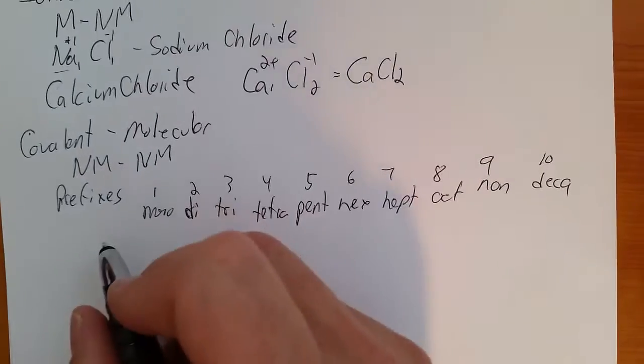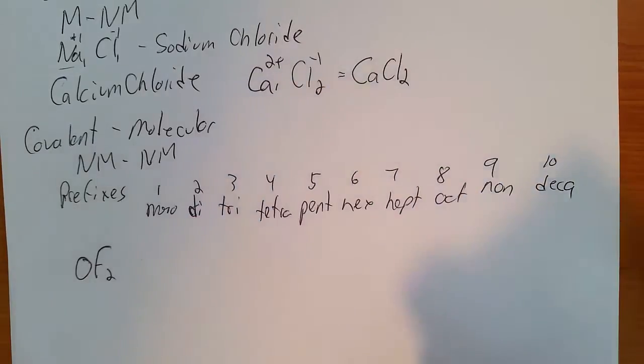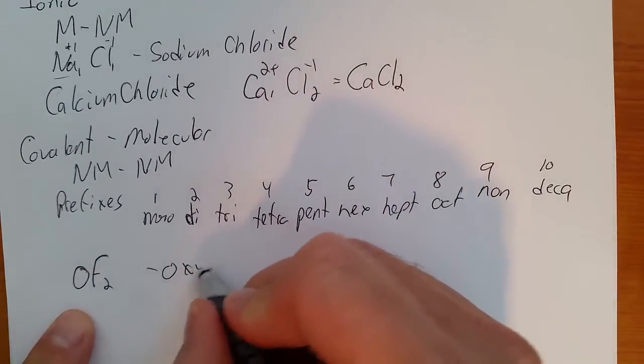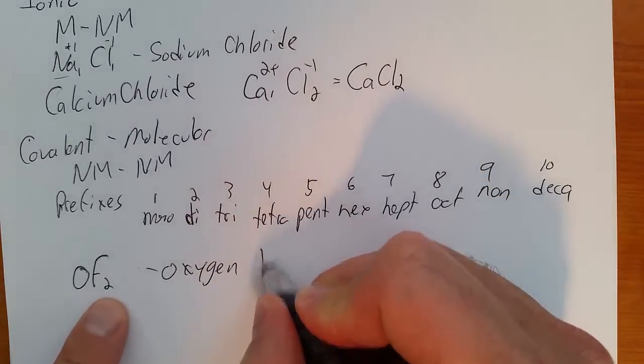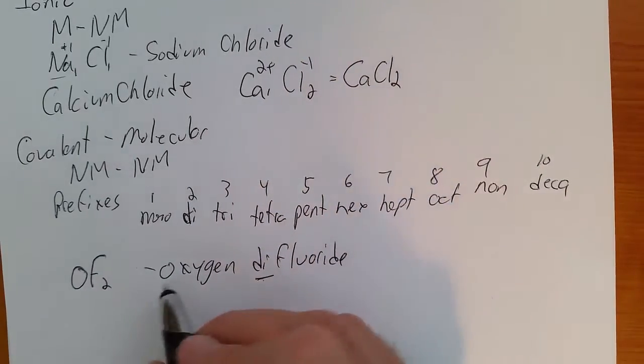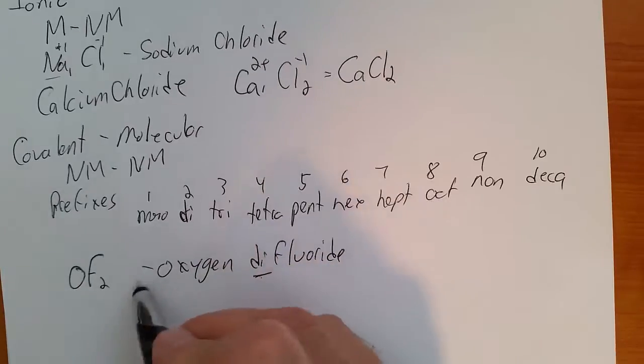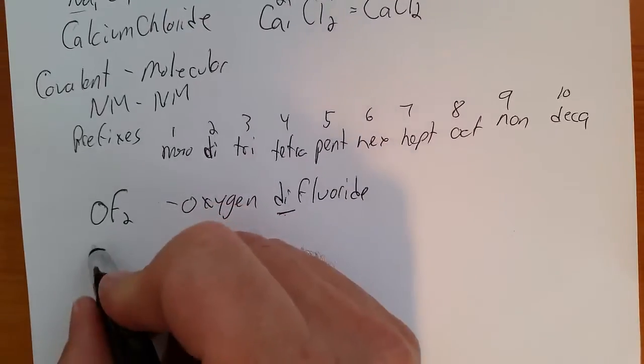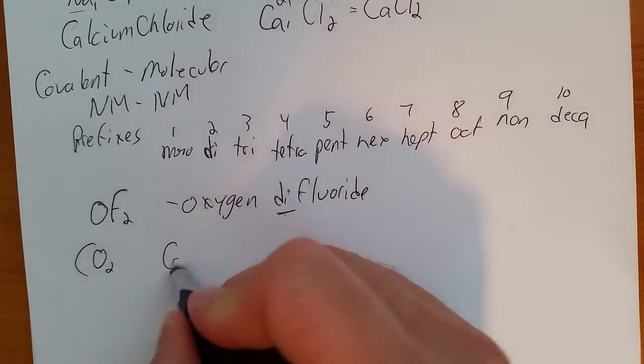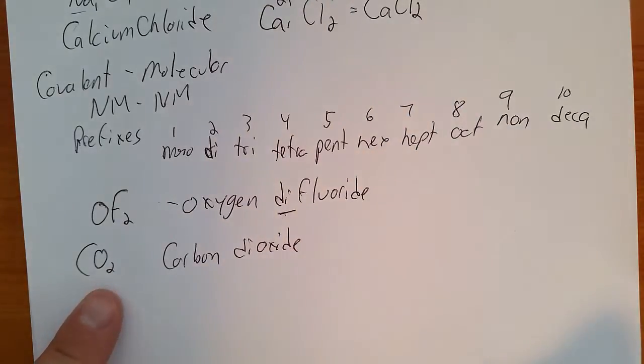So if we have something like OF2, oxygen, 2 so di, fluoride. We don't have to use the mono in front of the first one. We don't have to say mon-oxygen-difluoride. We can just say oxygen difluoride because the mono is understood. But if we do CO2, it's carbon, 2 so dioxide.